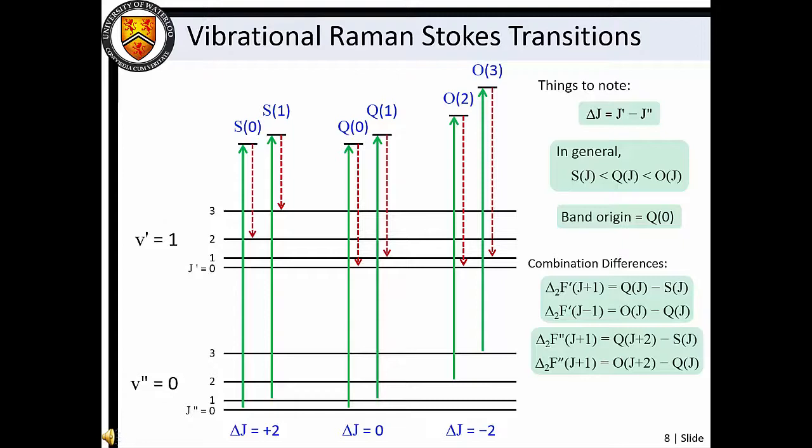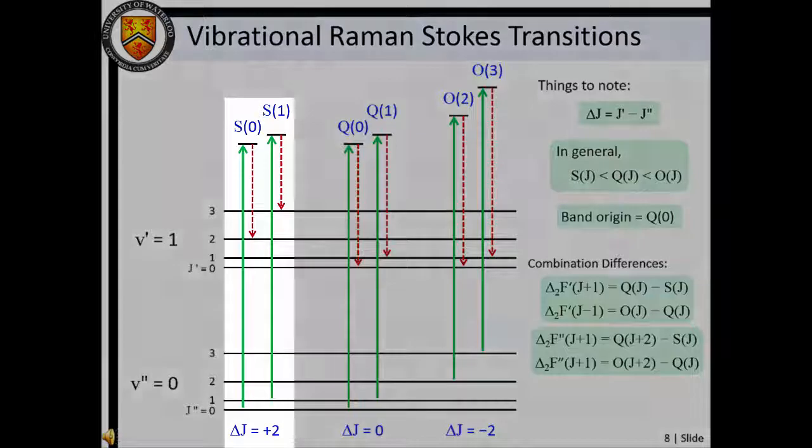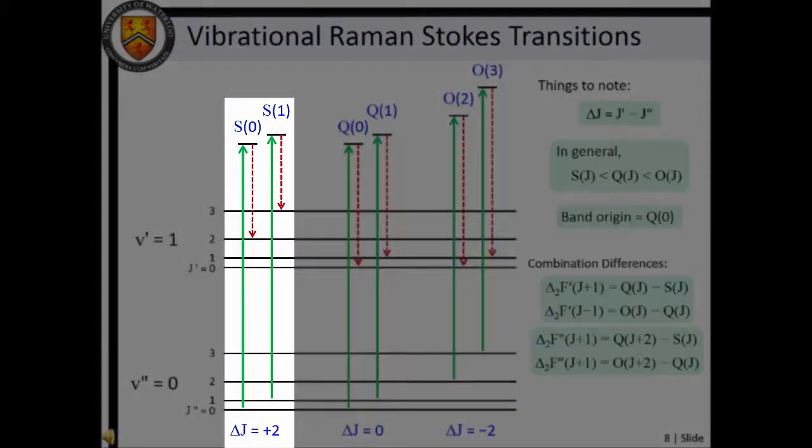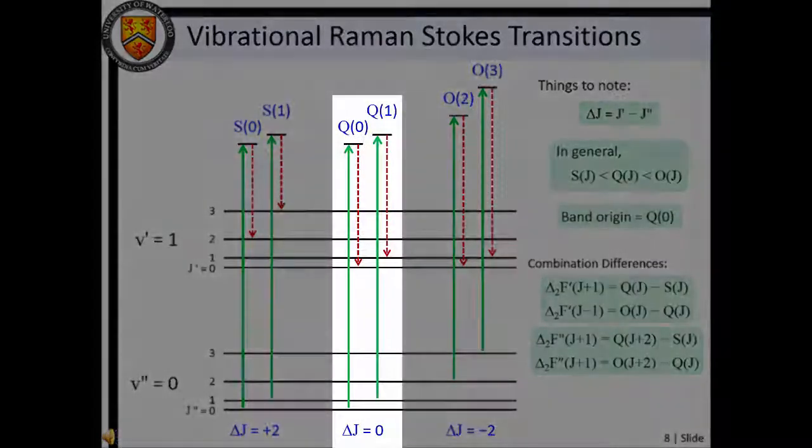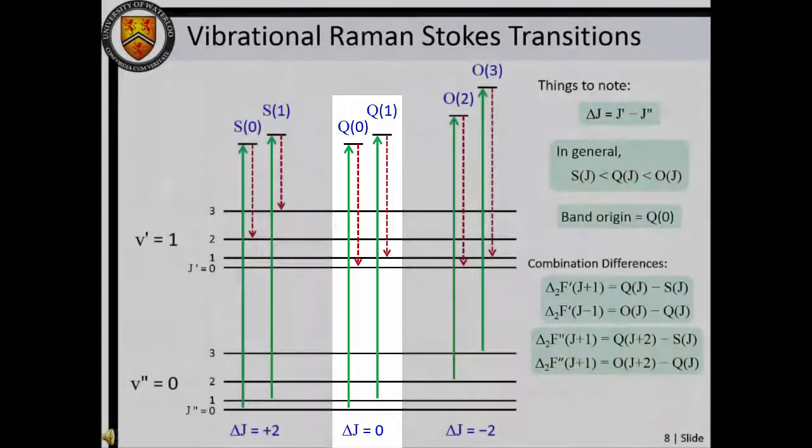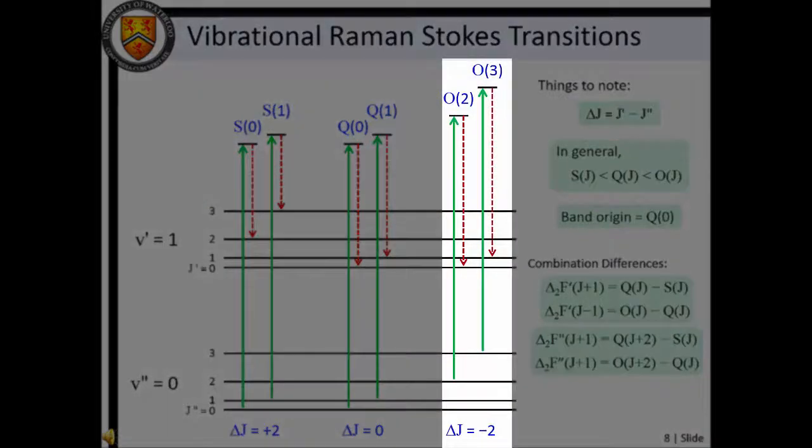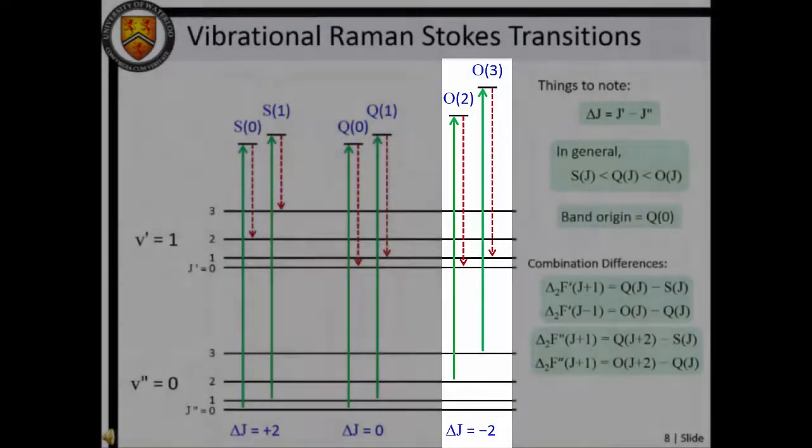Concomitant with the vibrational excitation, we must also consider the Δj equals zero plus or minus two selection rules. Transitions in which j changes by plus two are known as S-type transitions or S lines. Transitions where j does not change are Q-type transitions or Q lines, and transitions where j changes by minus two are O lines.